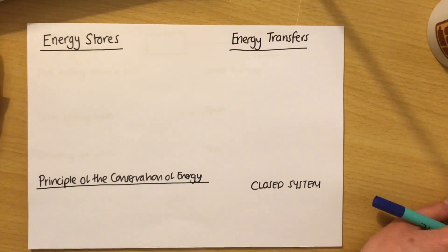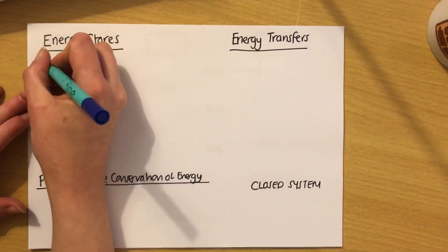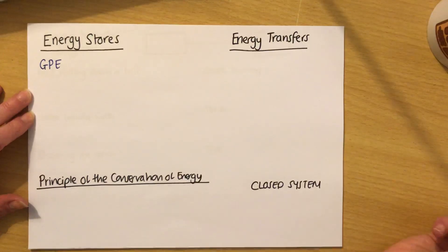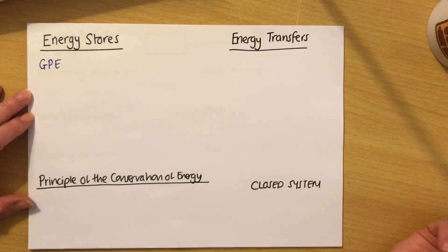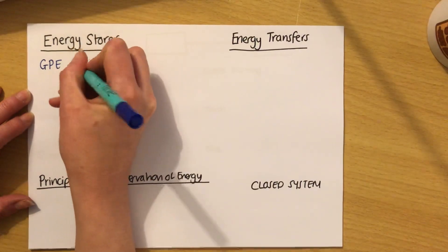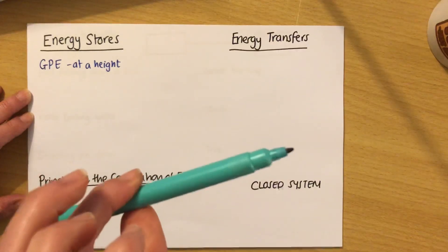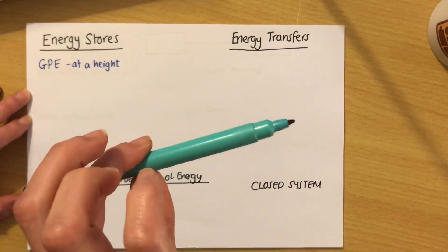The first thing to know is that energy can be put into eight different types of stores. You need to know these stores off by heart. The first is gravitational potential energy, or GPE, because physicists are lazy and don't like writing out really long things. GPE is when anything is at a height, so if it can fall. For example, if I lift this pen up, it's now got GPE because it can fall.